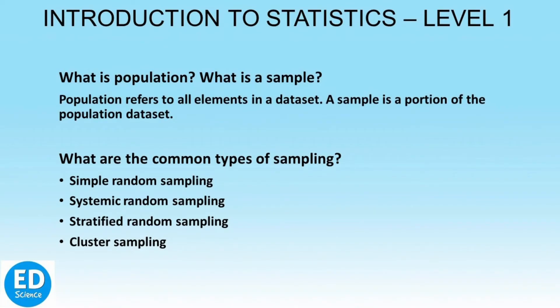Let us start with the terms population and sample. It is important to know the difference between these two terms because of the way in which observations are assigned to the data set. Population refers to the entire set of numbers, entire group of persons, entire group of objects in a data set — basically all elements in the data set — whereas a sample refers to one or more observations taken from the population. A sample is a portion of the population.